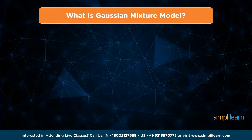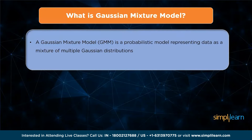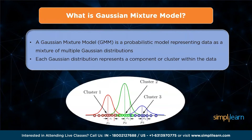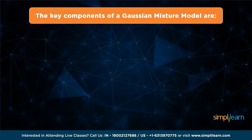A Gaussian mixture model is a probabilistic model representing data as a mixture of multiple Gaussian distributions. It is a mixture model because it assumes that data points are generated from a mix of Gaussian distributions, each associated with a certain probability. In GMM, each Gaussian distribution represents a component or cluster within the data, and the model combines these component distributions with mixture weights to form the overall probability distribution of the data.